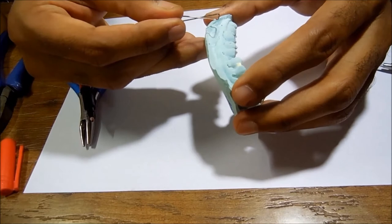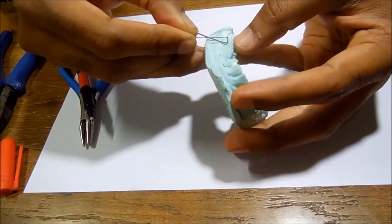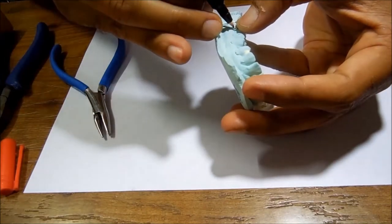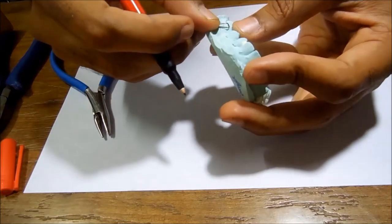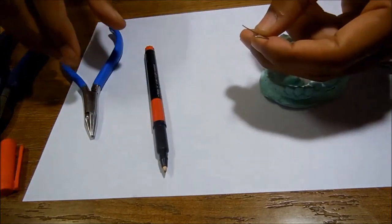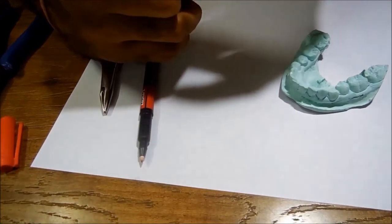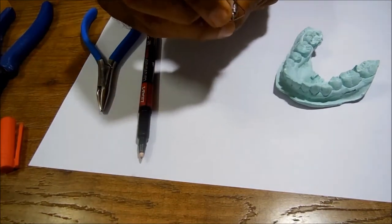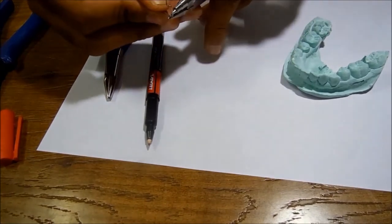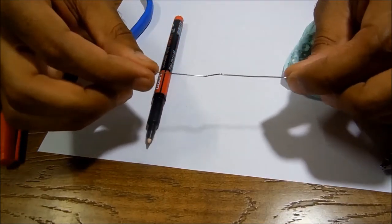Now we have to decide the height of the Adams clasp, which is roughly at one half, or let's say exactly at the half, of the cervical occlusion length. So I will be marking the length, the height of the Adams clasp, and I give a bend. This is what decides the height of my Adams clasp.